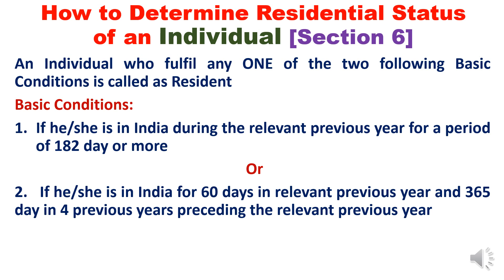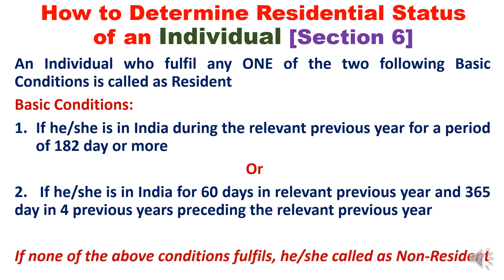If the first basic condition is satisfied, there is no need to check the second. If the first basic condition is not satisfied, then we check the second: if he or she is in India for 60 days in the relevant previous year, and 365 days in the four previous years preceding the relevant previous year, then he is a resident. If neither of these two basic conditions is satisfied, then he will be called a non-resident.